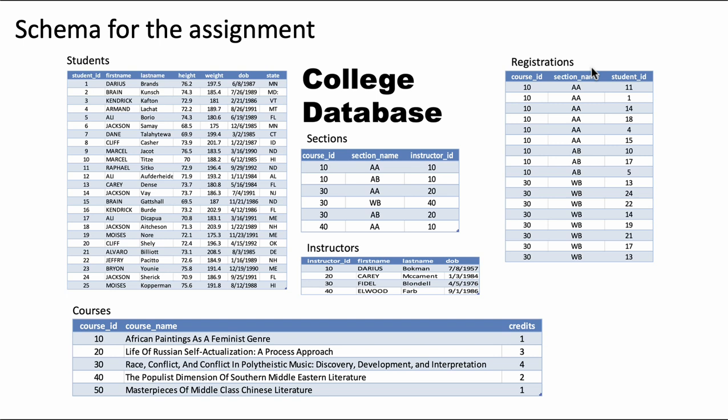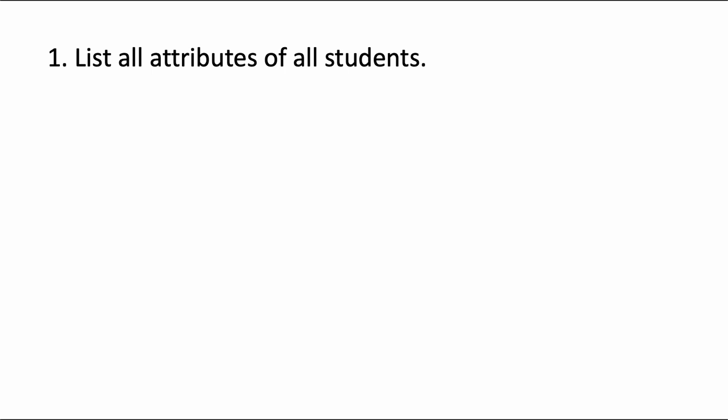So that's the overall structure. For all the questions in this particular assignment, we are looking at it from the context of this particular schema. With that said, let's move on to question number one. Question number one says: list all attributes of all students.